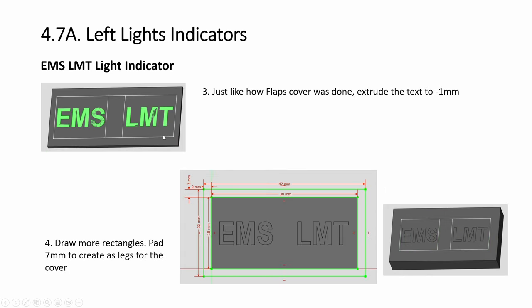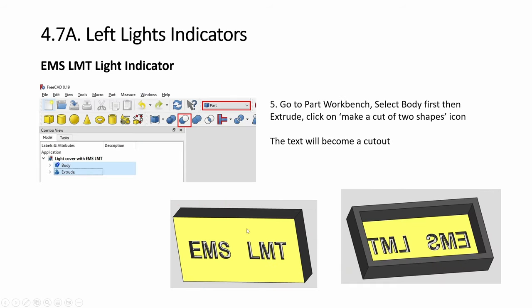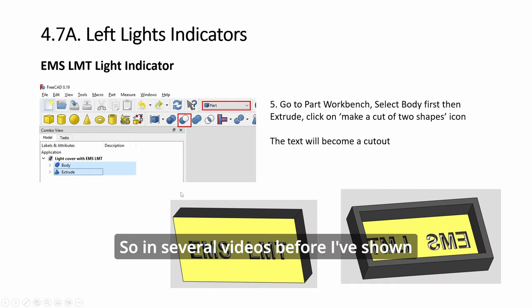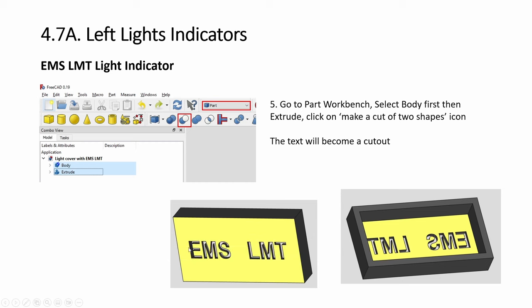You want to also draw another one and pad down. In several videos before, I've shown you how to do this cutout. You select the body first, and then the text, and then click on this in Part Workbench and you'll cut out the text.